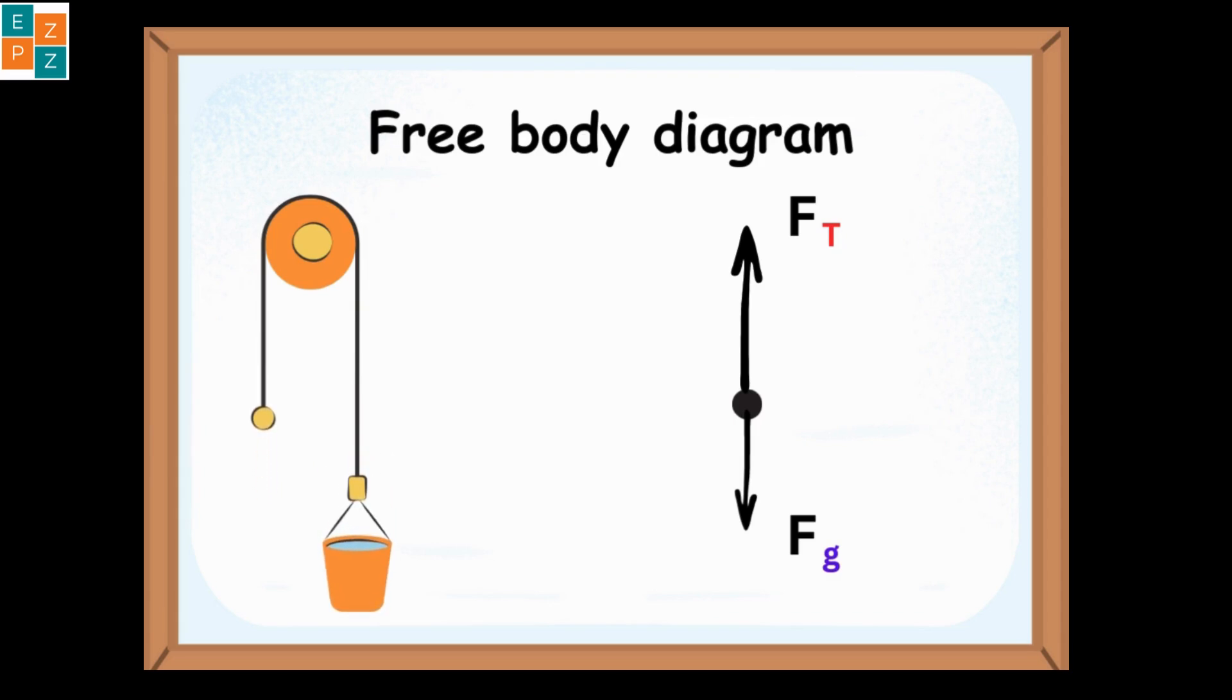The tension in the rope pulls the bucket directly upward, and gravity pulls it downward. Since there's no horizontal force applied to the bucket, it doesn't move sideways.